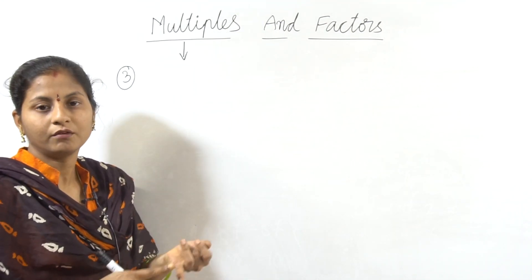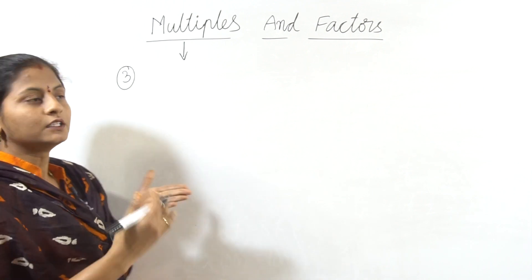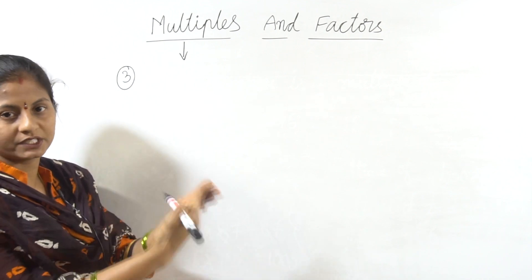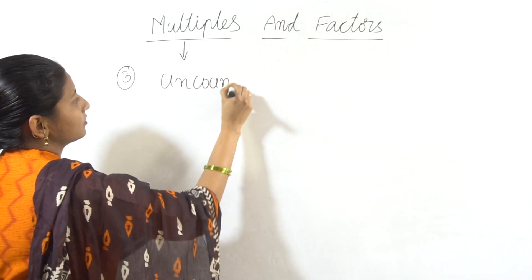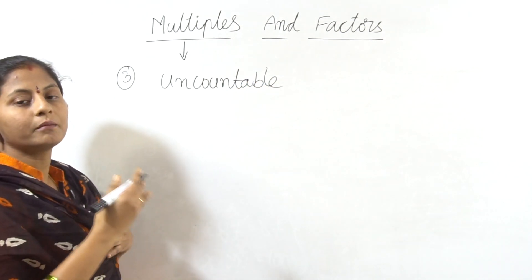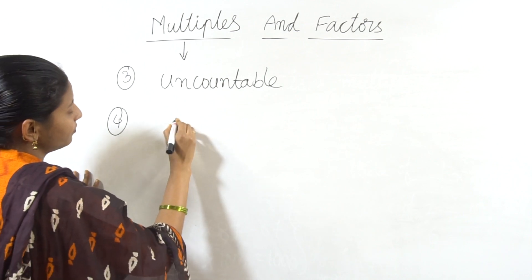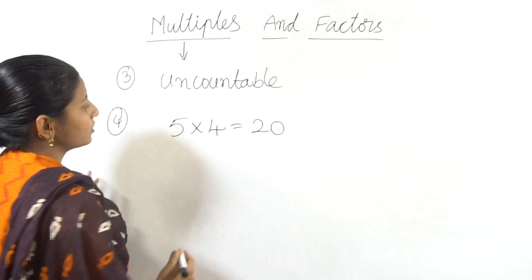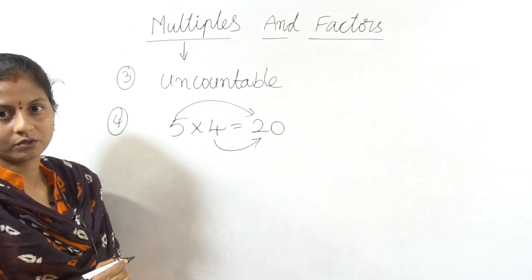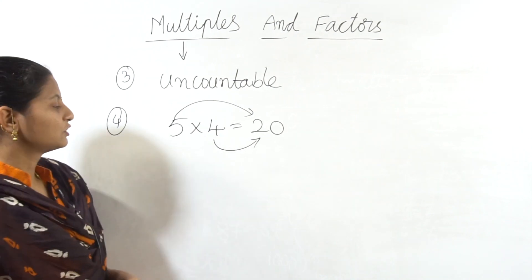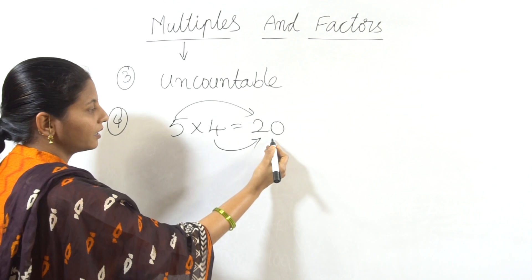Next: the multiples of any number — 3, 4, 5, 10, or 15 — are uncountable. They are endless, infinite numbers. And another fact: 5 into 4 is equal to 20. So 20 is a multiple of 5, and at the same time, 20 is also a multiple of 4. The product of two numbers is a multiple of both numbers.